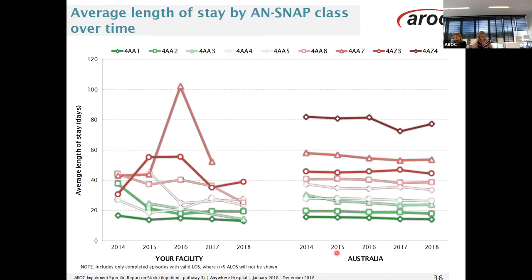This is another time series graph displaying average length of stay in days on the left-hand side by ANSNAP class. Each ANSNAP class is represented in the legend by a different colour line and shape. Your service is displayed on the left-hand side and Australia on the right-hand side. A note at the bottom of the page indicates that this graph only includes completed episodes with valid length of stay and those where there were five or more episodes, so some ANSNAP classes may be missing. The national averages for each ANSNAP class remain fairly consistent over time, however the variability for your service's graph could be explained by lower volume — for example, ANSNAP class 4AA7 has a dramatic increase in average length of stay in 2016, potentially due to just one episode with a very long length of stay.